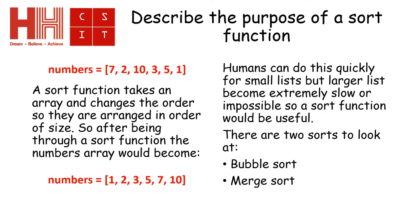Humans can do this very quickly and I did do that by hand. If they get too many numbers, that's going to become extremely slow or almost impossible. To overcome this, we have two different sort functions that we need to think about. The bubble sort and the merge sort. We'll do bubble sort today and in future lessons we'll do the merge sort.